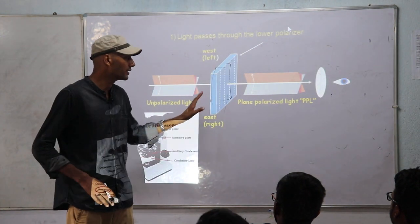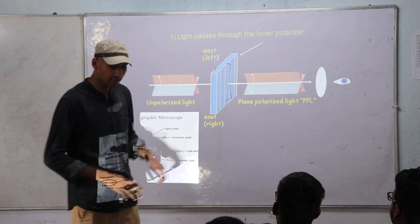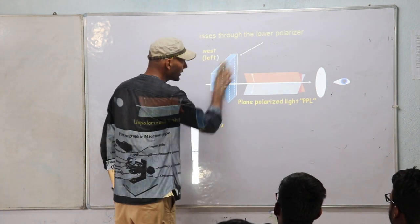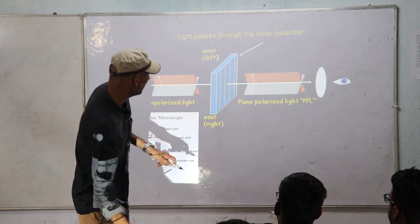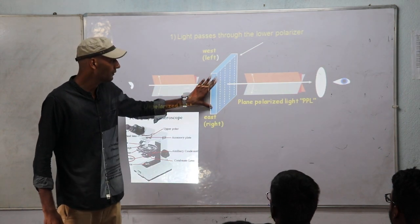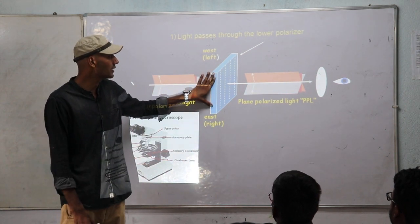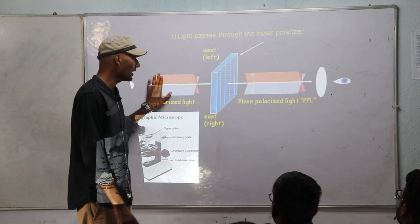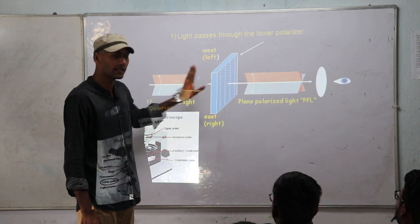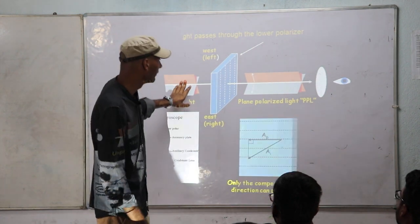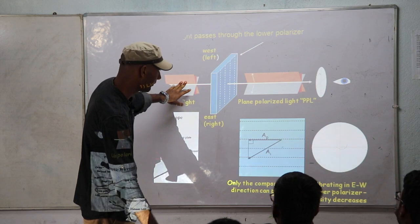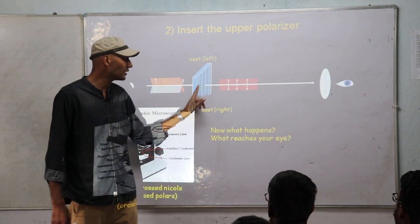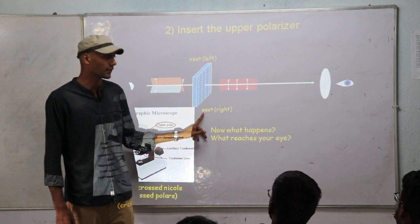If there is a polarizer, you can see its fixed vibration direction — from west to east. The polarizer has its fixed orientation of vibration from left to right or west to east. When the unpolarized light ray enters the polarizer, it vibrates only in the direction parallel to the vibration direction of the polarizer.